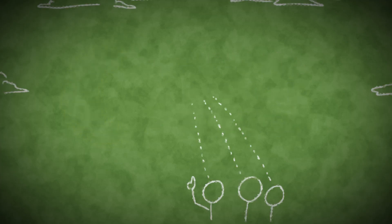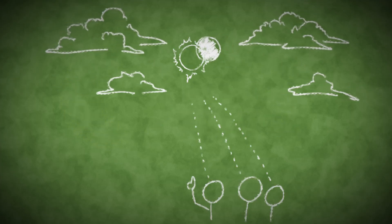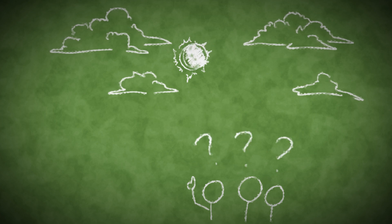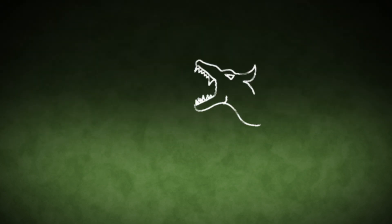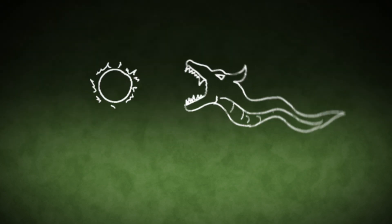As long as we have gazed at the sky, people have regarded eclipses of the sun as mysterious and even terrifying events. When the sky went dark in the daytime, many ancient cultures feared that a monster might be devouring the sun.